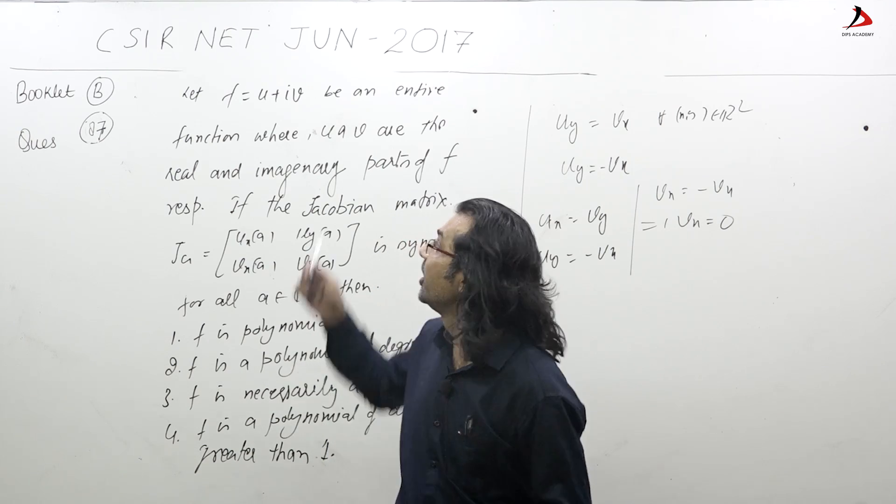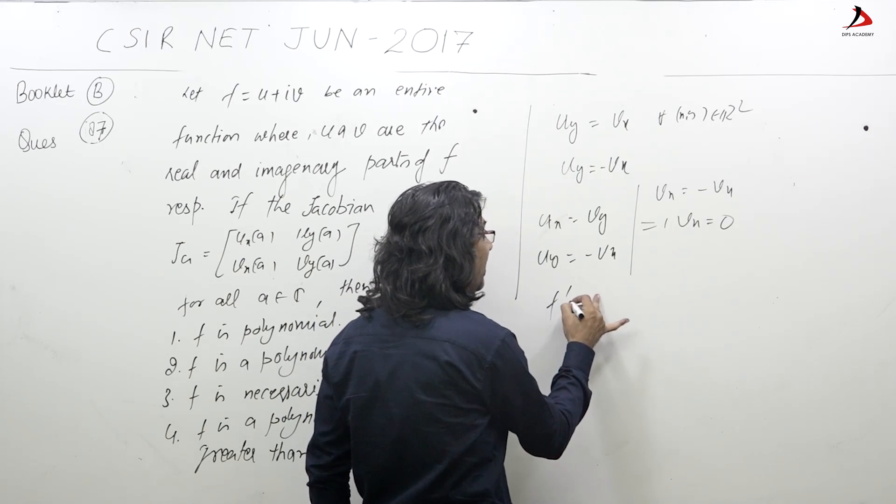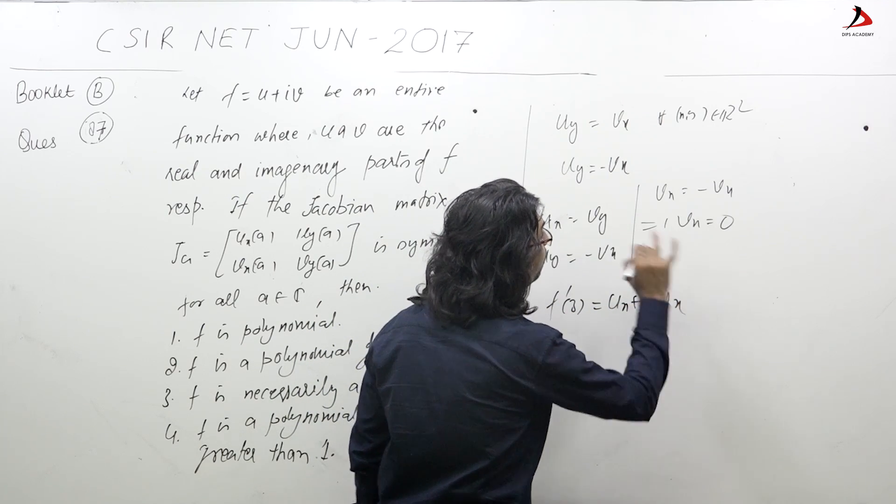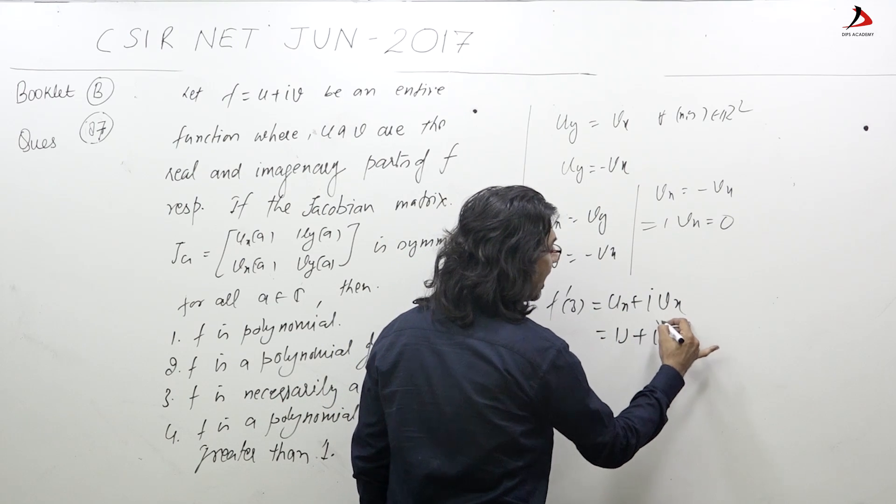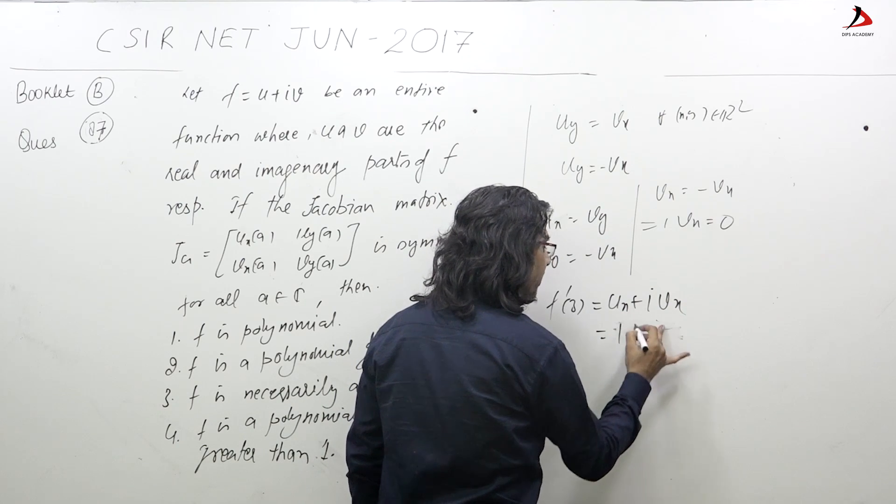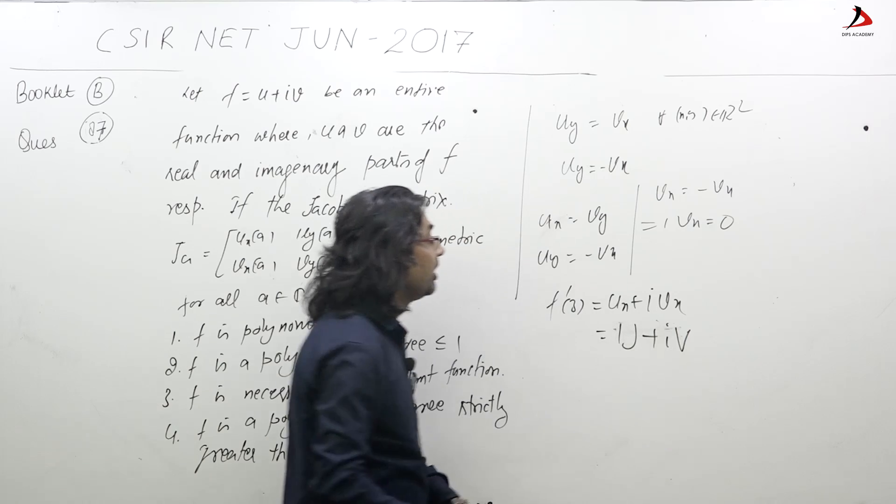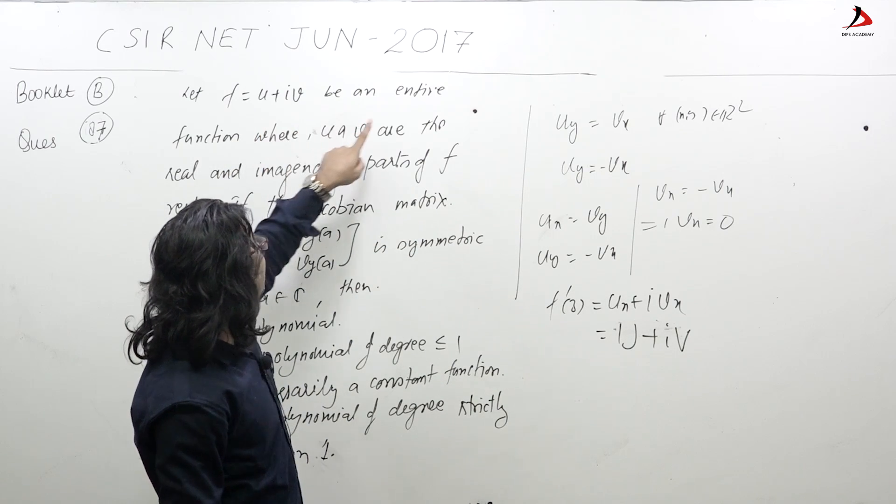Here, then f'(z) comes out to be u_x + iv_x by this, and this is equal to... you can say this is u_x + iv_x.